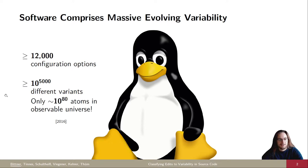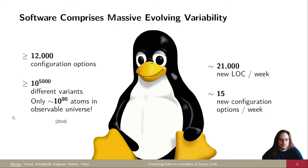As a comparison, there is only about 10 to the power of 80 atoms in the observable universe. Each week we get 21,000 new lines of code and 50 new configuration options, so someone has to keep track of all this variability and ensure that the software is still correct.